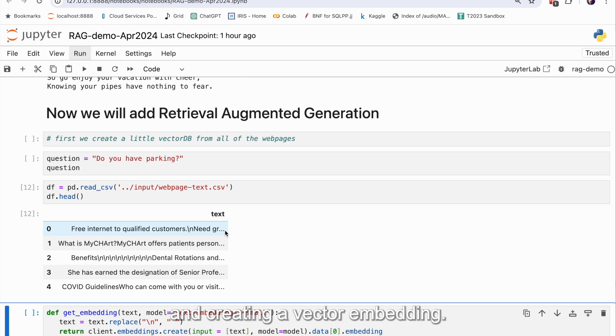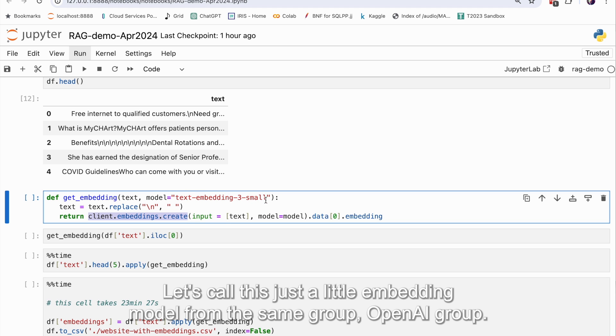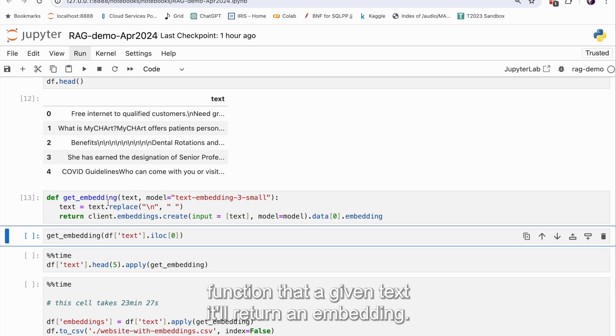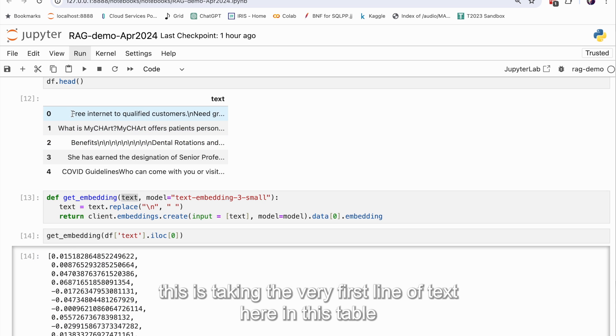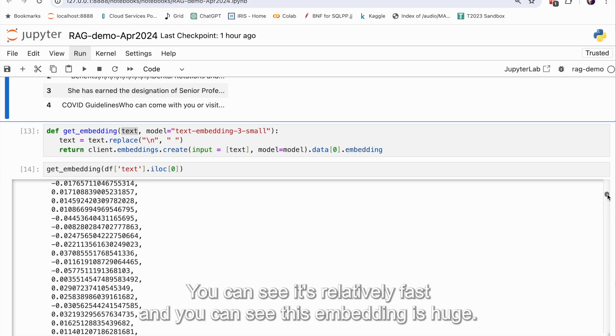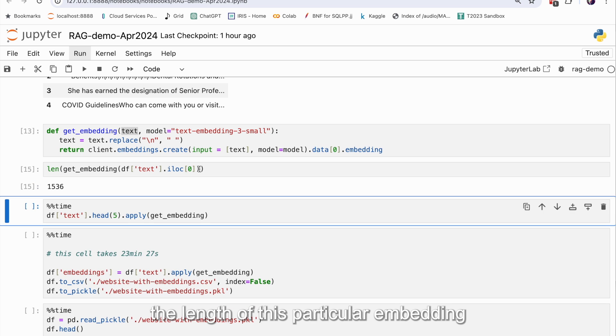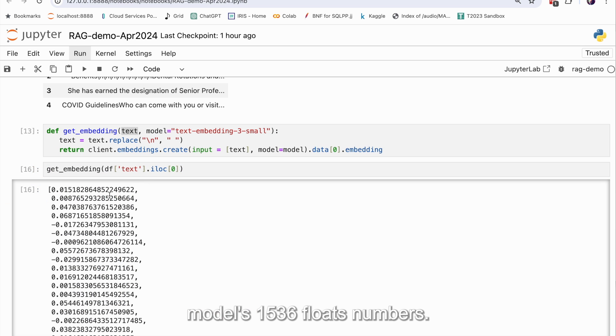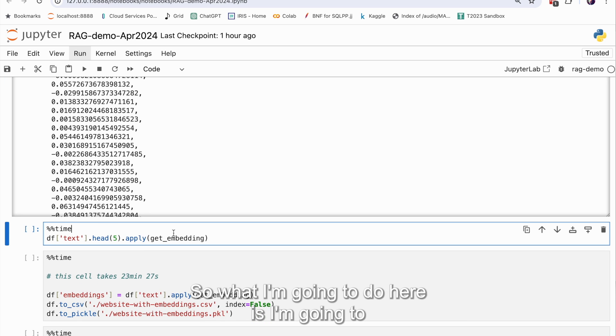It kind of represents the essence of that text. So this is a little function that does that by calling GPT-3, basically, GPT-3 small. Call this just a little embedding model from the same group, OpenAI group. So that's a little function that a given text, it'll return an embedding. And for example, this is taking the very first line of text here in this table, and it's getting an embedding for that text. You can see it's relatively fast. And you can see this embedding is huge. I forget the length of it, actually, I can tell you if you're interested. The length of this particular embedding model is 1,536 floats. So that essentially represents the essence of that first line of text.